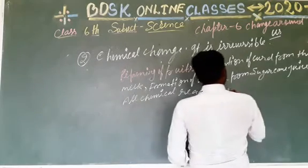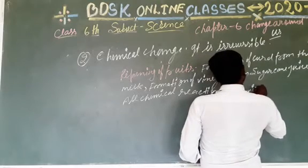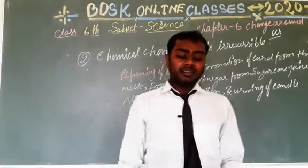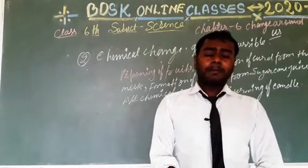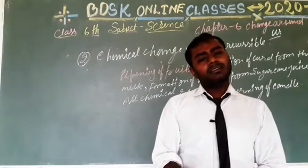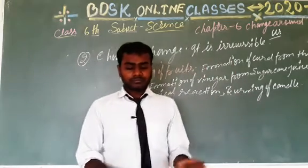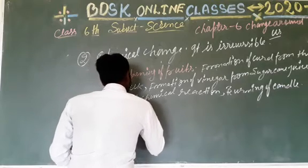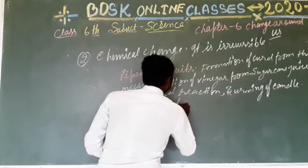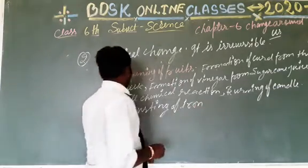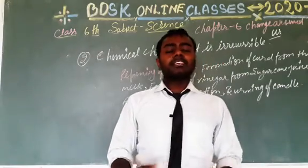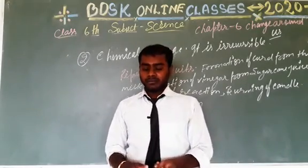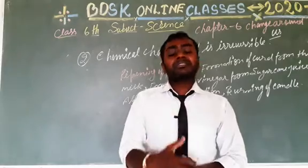Burning of a candle — 'mumbbatti ka jalna' — this belongs to chemical change and it is not reversible. Another example is rusting of iron, which is also a chemical change and is a permanent change.